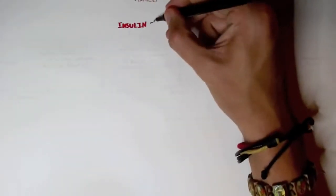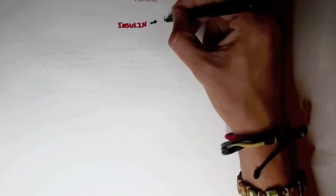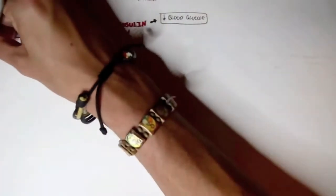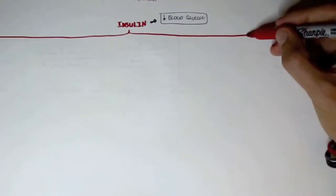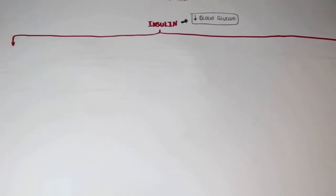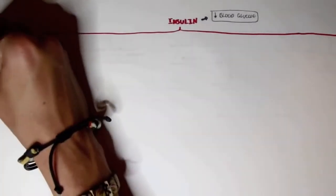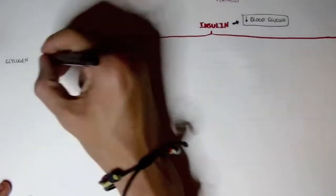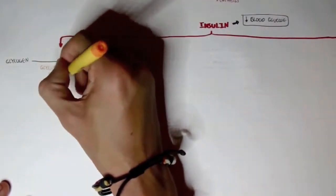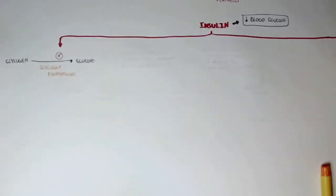Looking at the broad picture: insulin essentially lowers blood glucose levels and stimulates the absorption and storage of excess energy. Let's go over the major effects insulin has in the body. Insulin inhibits the degradation of glycogen to glucose — so it inhibits glycogen phosphorylase, the enzyme responsible for this.